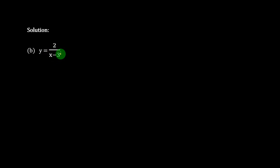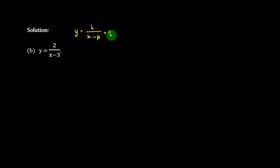2 times 2 times. Now, we can write that y equals k by h minus b plus 2. So, here is k.